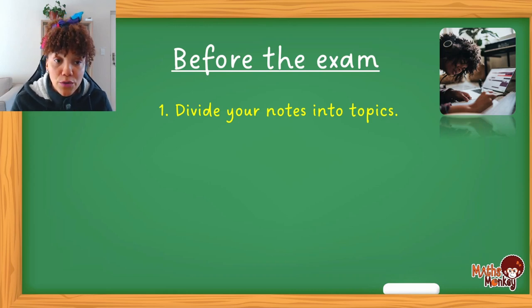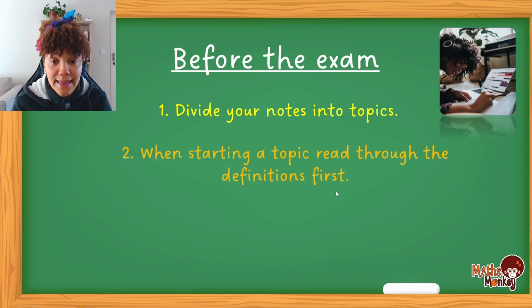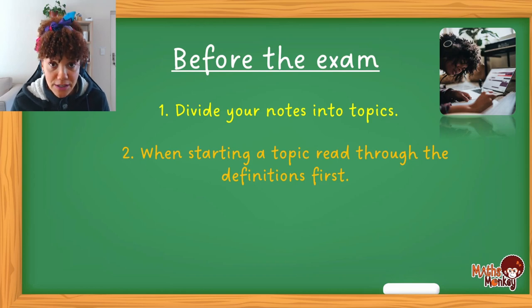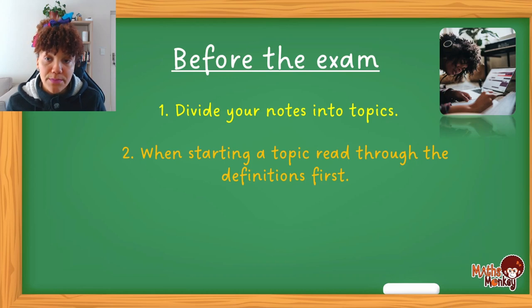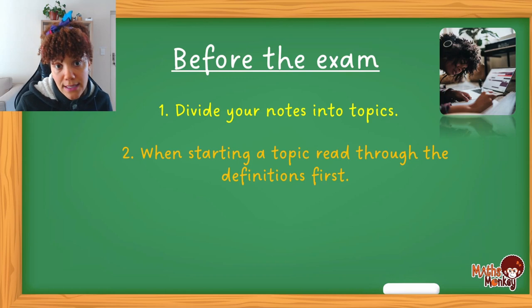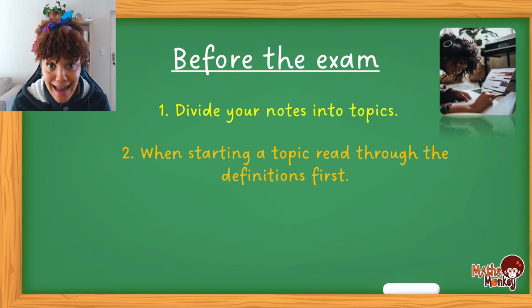So divide everything into the right topics first. Then, before you actually start studying a specific topic, make sure you familiarize yourself with the definitions of the words and that you understand them. If you are doing measurement, make sure you understand what perimeter means, what area means, what volume means, what units are, what centimeters are. Make sure you actually understand and know all these definitions.